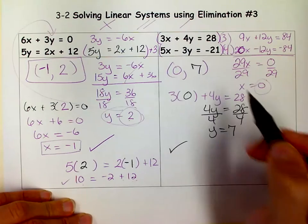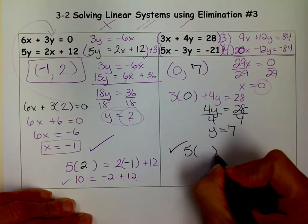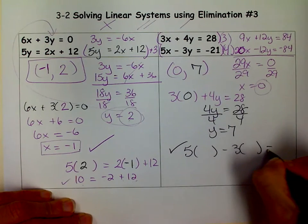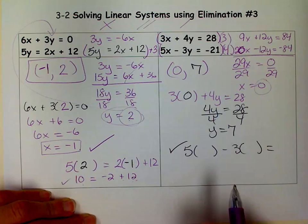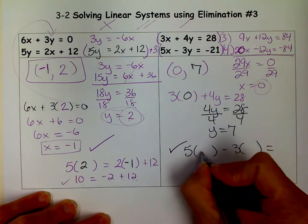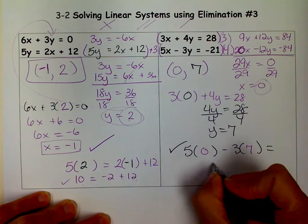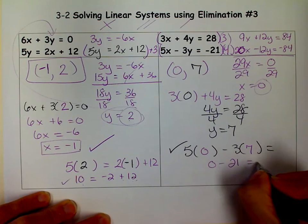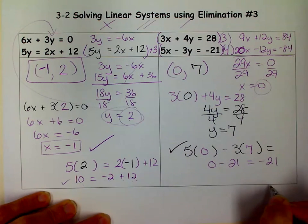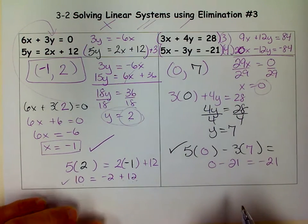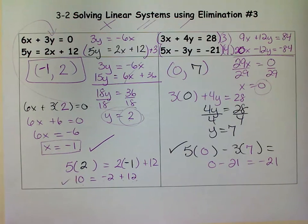So remember I'm going to check into the second equation. I'm going to say 5 times X minus 3 times Y. And does that equal negative 21? Because I want it to equal negative 21. So I put my 0 in here. My 7 in here. That's 0. And does 0 minus 21 equal a negative 21? Yes it does. So that's my check. It was really important to check. I hope you'll take the time to do that.